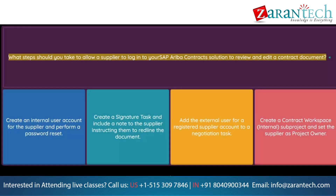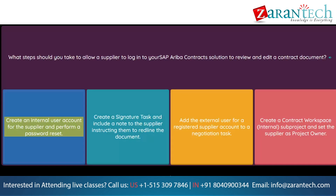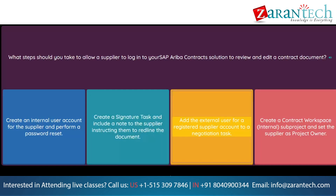Question: What steps should you take to allow a supplier to log in to your SAP Ariba Contracts solution to review and edit a contract document? Option 1: Create an internal user account for the supplier and perform a password reset. Option 2: Create a signature task and include a note to the supplier instructing them to redline the document. Option 3: Add the external user for a registered supplier account to a negotiation task. Option 4: Create a contract workspace internal subproject and set the supplier as project owner.